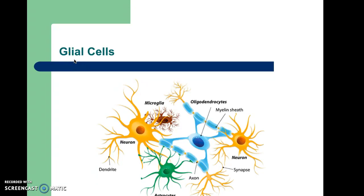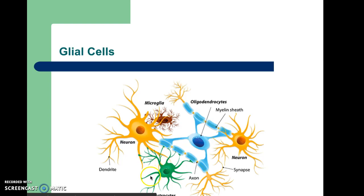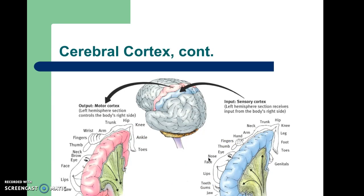Glial cells don't always get much attention, but perhaps they should. Their name refers to 'glue' because researchers originally thought they held neurons together. Oligodendrocytes are involved in guiding connections and linking neurons that get cabled into nerves. Astrocytes provide nourishment and support to neurons, and increasingly we understand that glial cells may even guide synaptic connections. Although they've been conceived of as glue, more recently people think of them as 'neural nannies' that care for and support neurons.